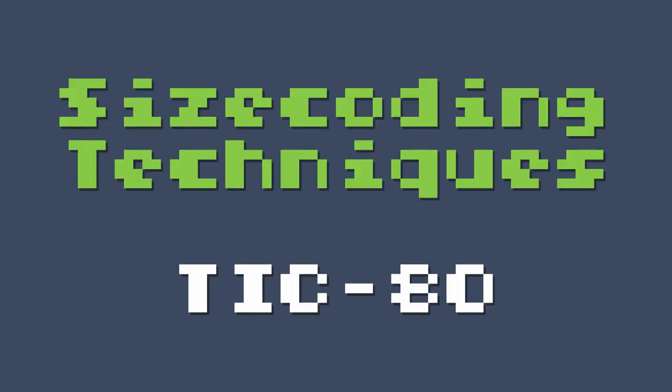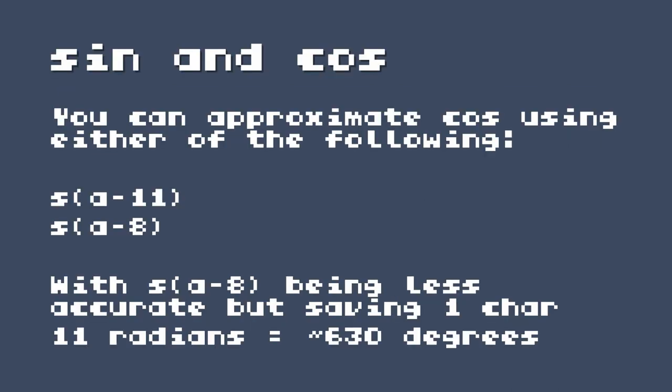Now we're going to move on to some size coding techniques specific to TIC-80. If you're using sine and cosine, you can approximate cosine using sine with an offset. This isn't too useful on Pico-8 because Pico-8 uses turns instead of radians, so the saving doesn't really justify the technique, and we don't have the aliasing problem with math.cos and math.sin. Sine and cosine are 90 degrees out of phase, so cosine gives the same value as a sine that's 90 degrees different. The first option is to subtract 11 radians — 11 radians is 630 degrees, and if you subtract that from two full revolutions it gives you 90 degrees. With 8 radians it's a little less accurate but saves one character.